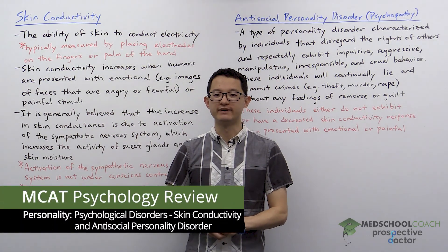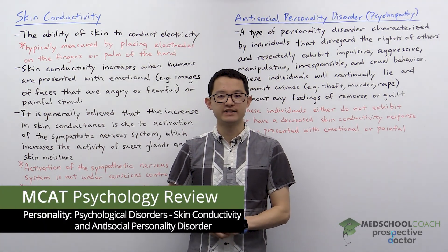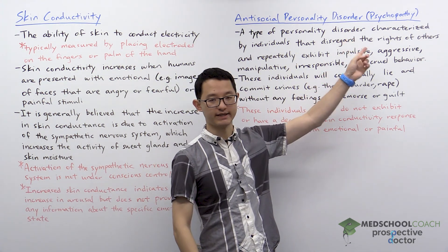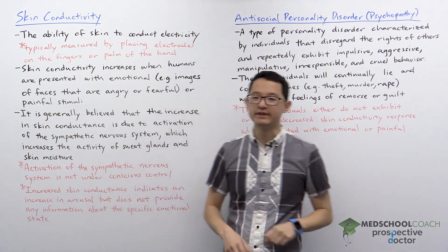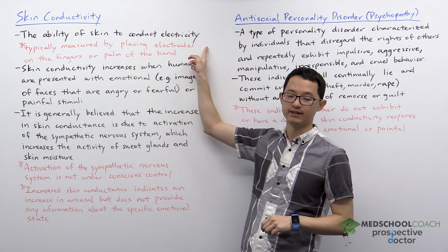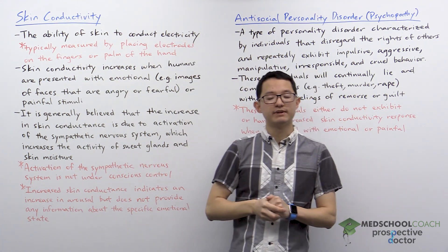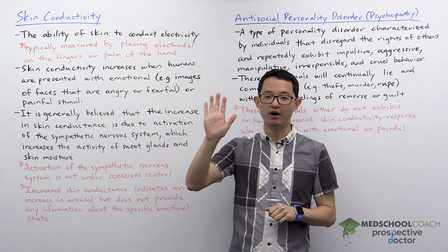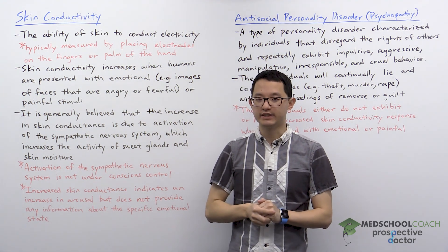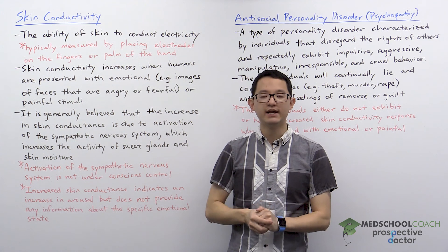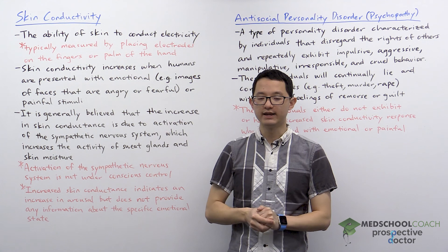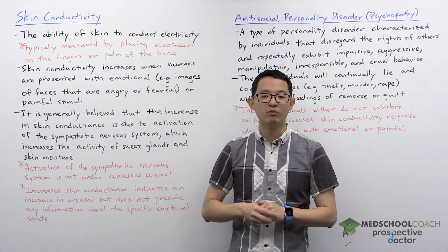In this video we're going to go over skin conductivity and antisocial personality disorder, which is also called psychopathy. Skin conductivity can be defined as the ability of skin to conduct electricity. This is typically measured by placing electrodes on a person's fingers or palm. When you present a human with emotional or painful stimuli, their skin conductivity will increase.